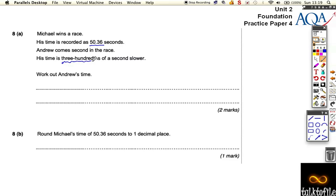of a second slower. Three hundredths of a second is actually 0.03, not 0.3, which you might make a mistake on. That would be three tenths of a second or 30 hundredths.